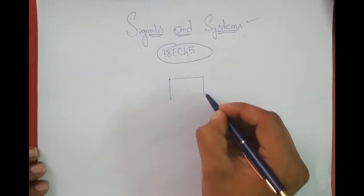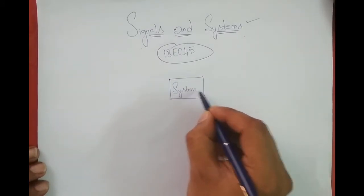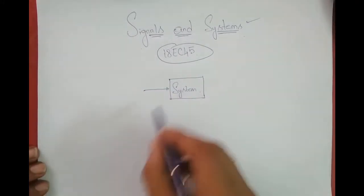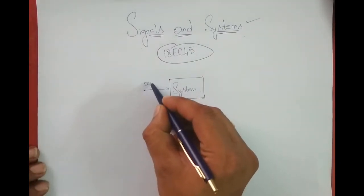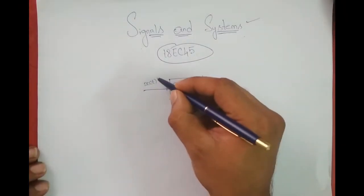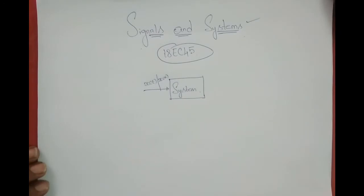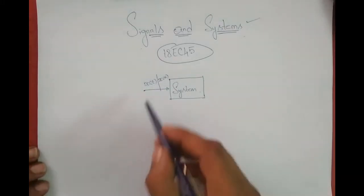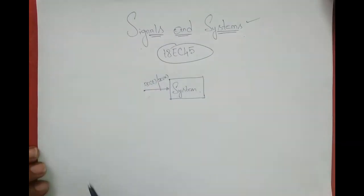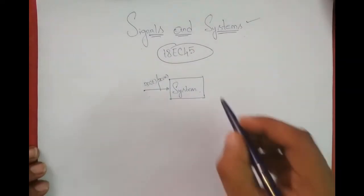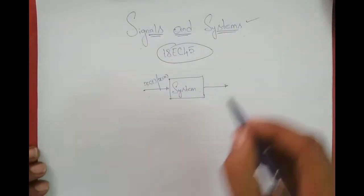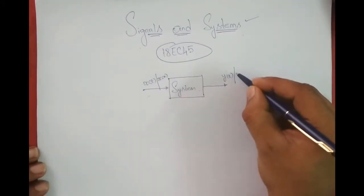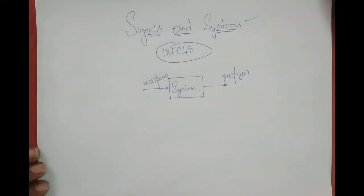Basically, we have a system, and the input to this system — let's call it x(t) if it is a continuous time signal, or x(n) if it is a discrete time signal. We will discuss continuous time and discrete time more in later topics. The output from this system is either y(t) if it is a continuous time system, or y(n) if it is a discrete time system.